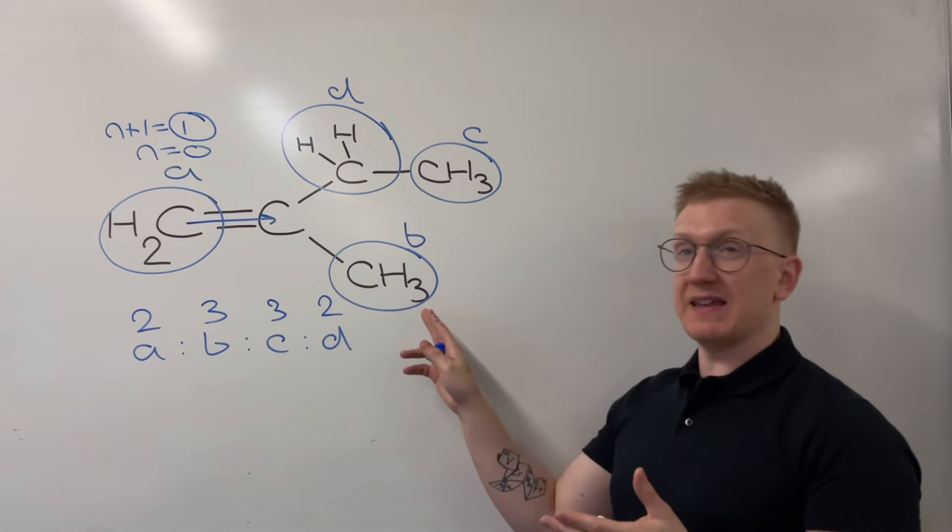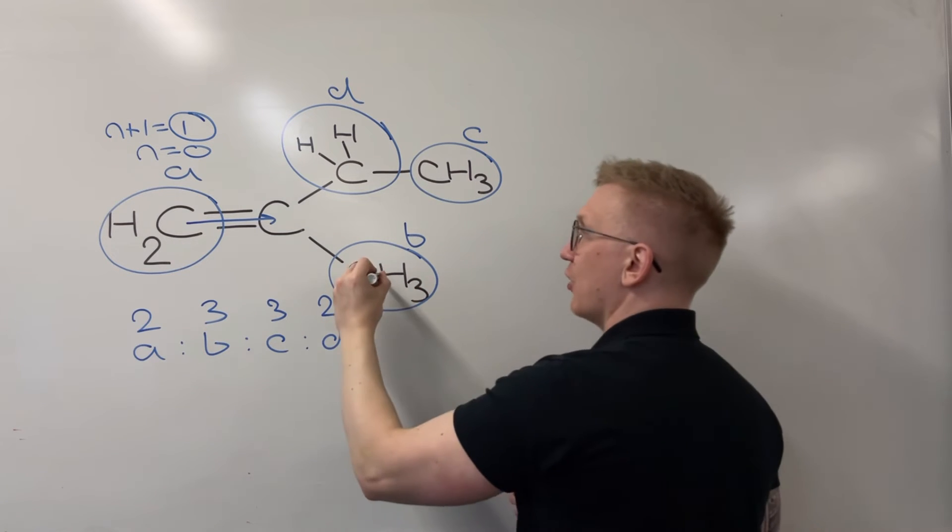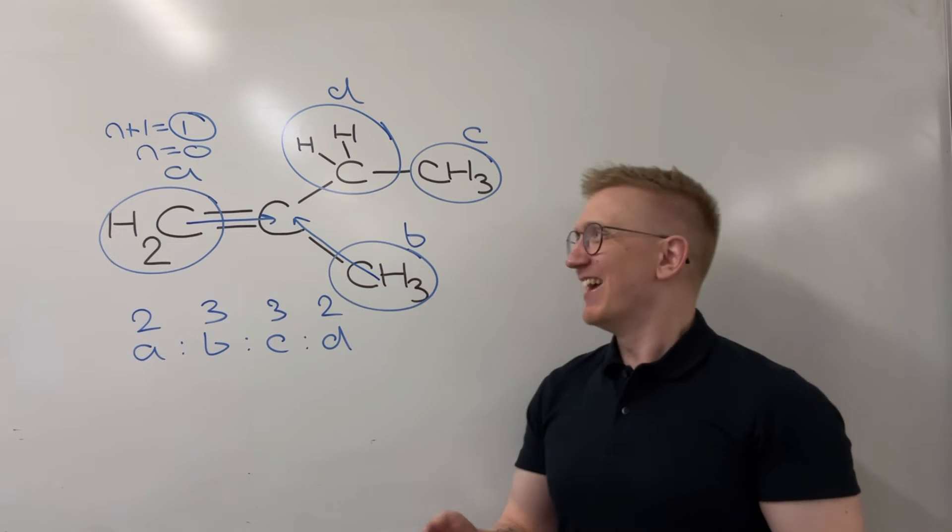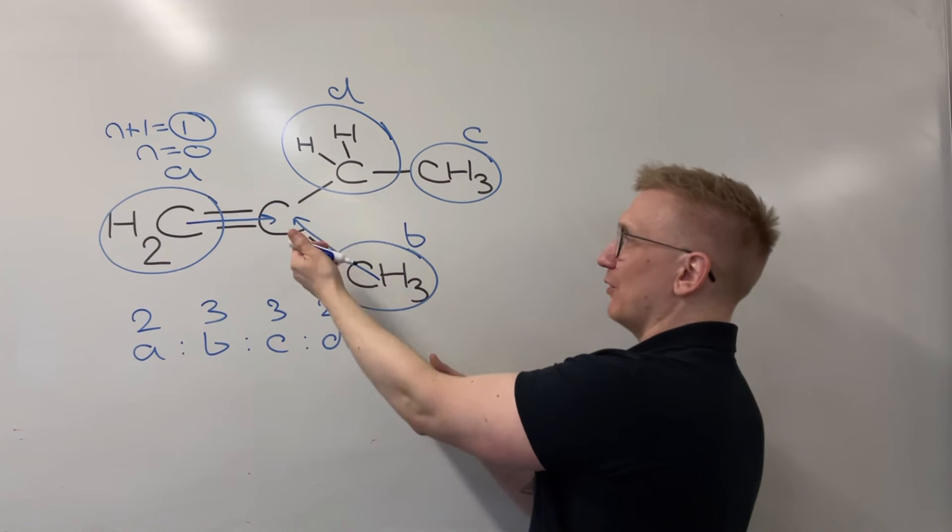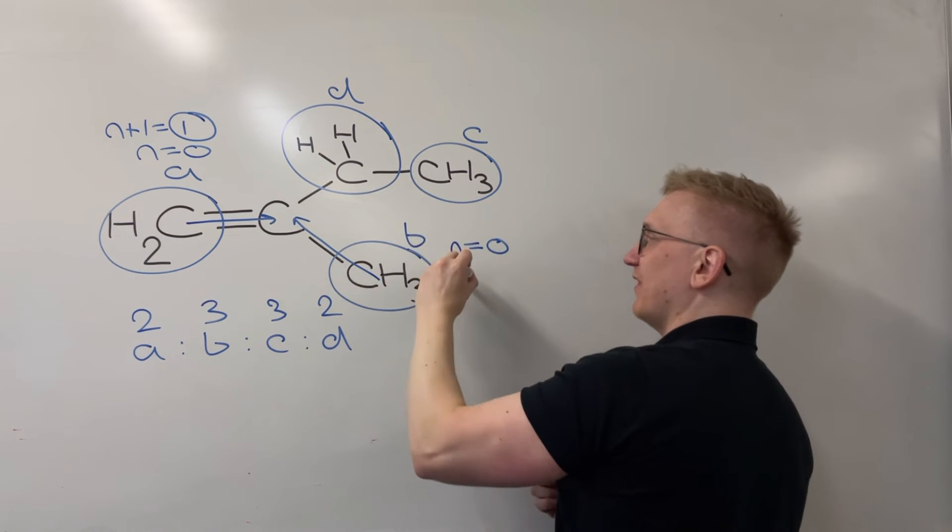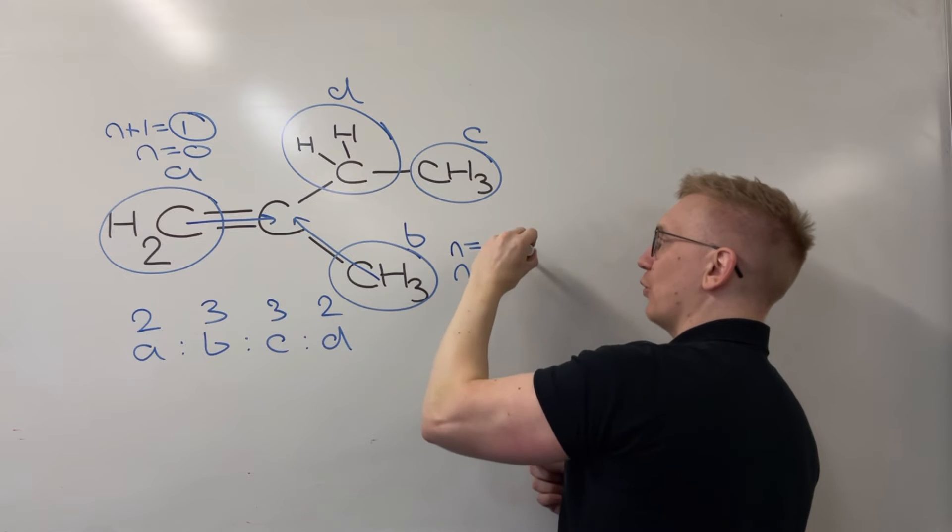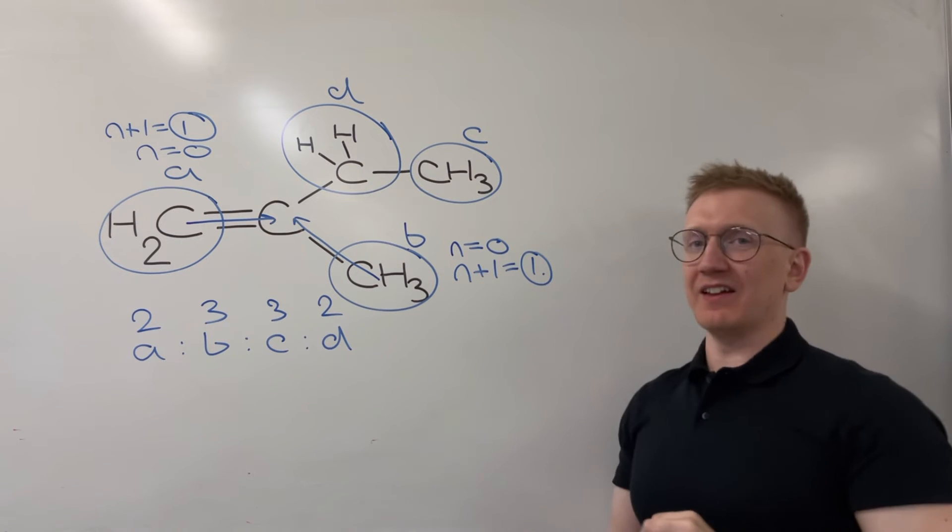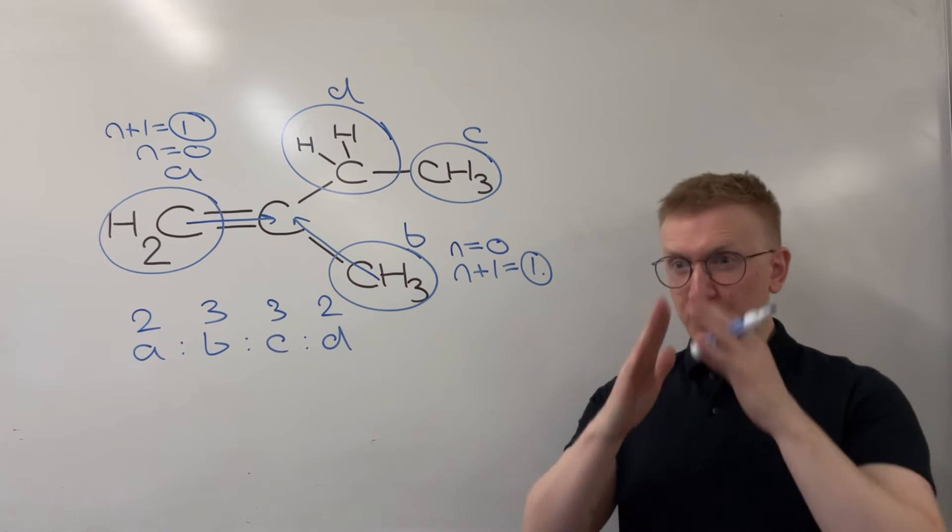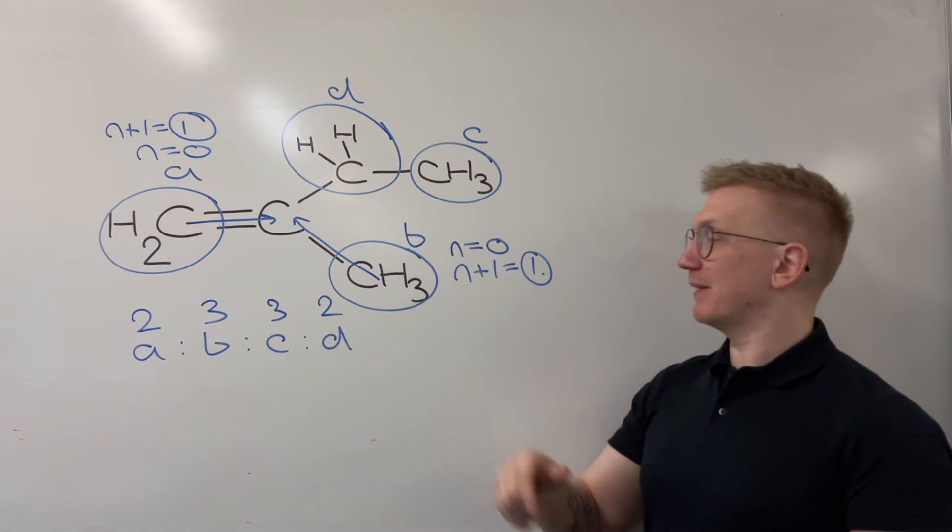So let's go to environment B then. So for environment B, I'm going to go to the next carbon up in the chain and the same thing's happened again. So here, once again, I've got absolutely no hydrogens here. And so N for this one is another zero, meaning that this peak would also be a singlet. So I would only expect to see one individual spike or one sub peak just there for this particular environment. So far, there's not a great deal of splitting going on in these splitting patterns.